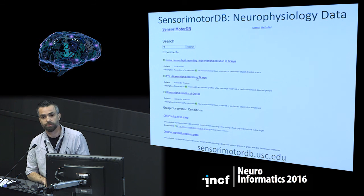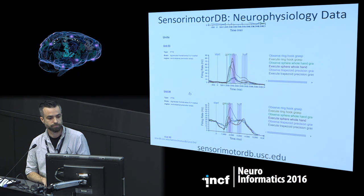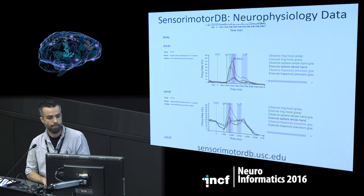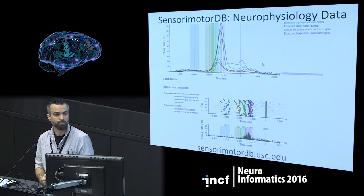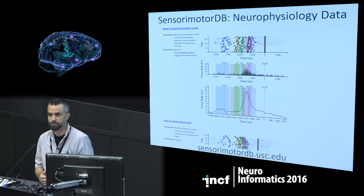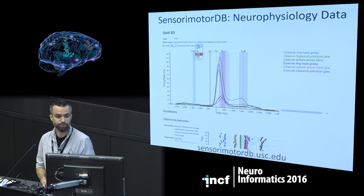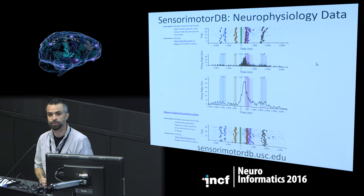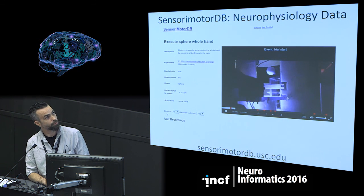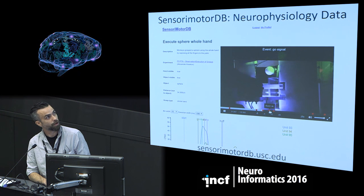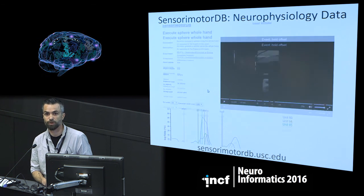Here we're searching through the database for experiments involving region F5 and pulling up that same experiment. We go to the unit view page to see the activity of a particular unit across all conditions, realign its firing rate to different events — including on the raster plots — and change the way firing rate is calculated by adjusting bin width and Gaussian width. Zooming in on one condition, we see a video of grasping a sphere object, with different events popping up. You can slow down the video, go through it frame by frame, and examine it in relation to events and neural activity traces.